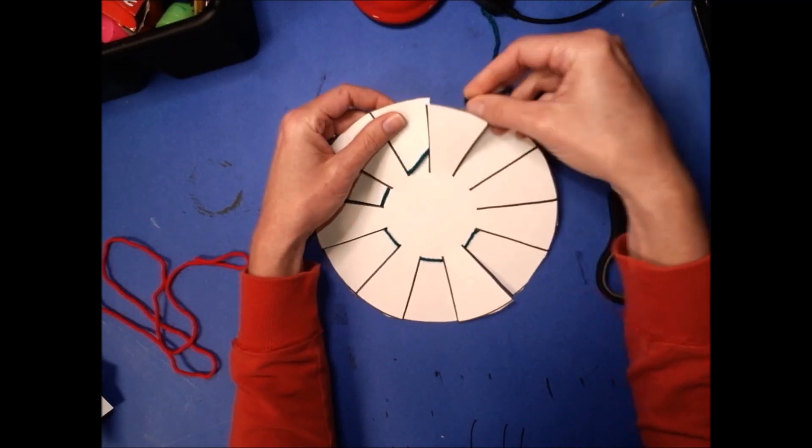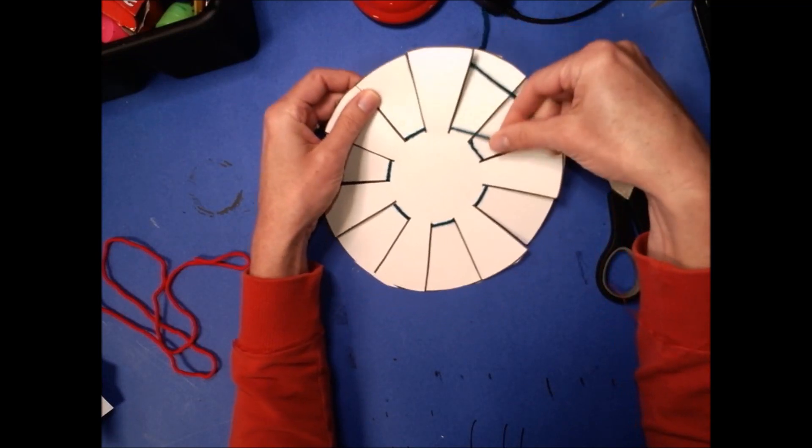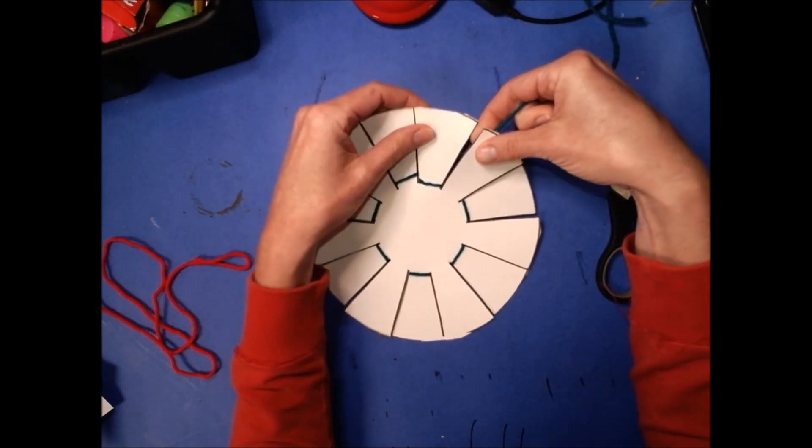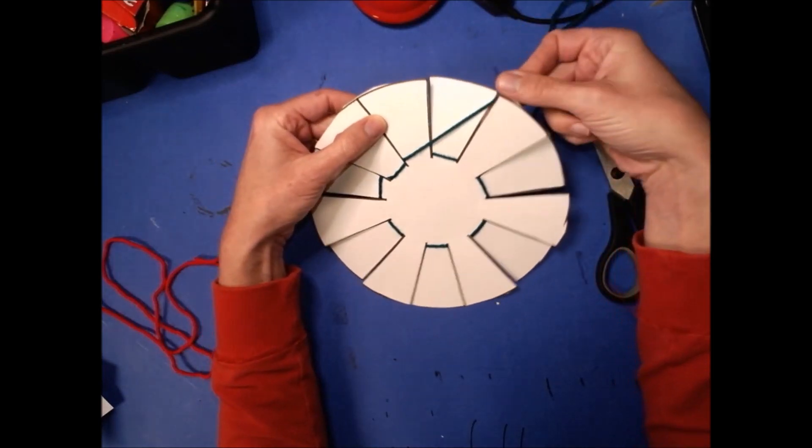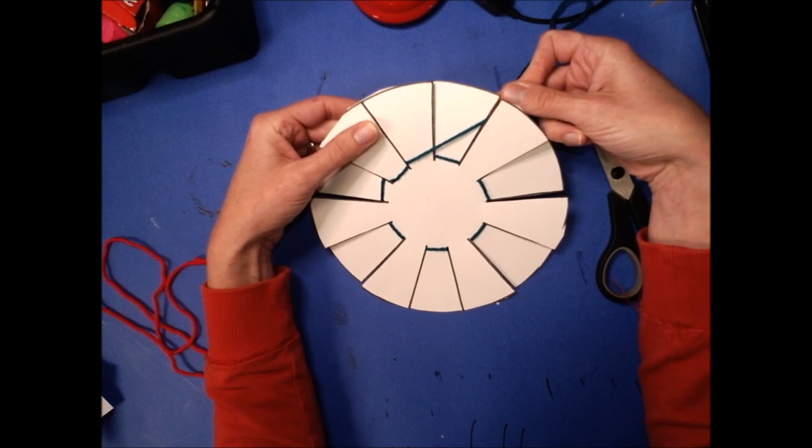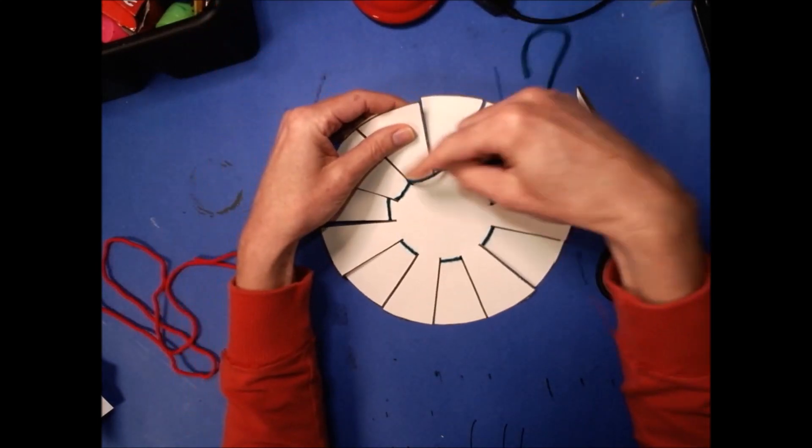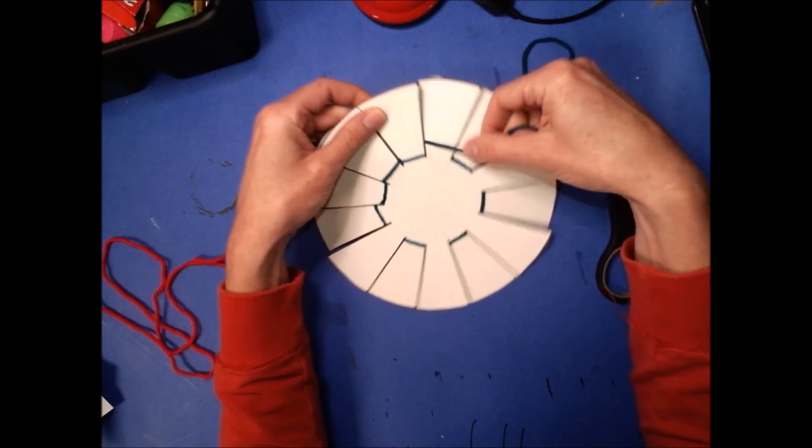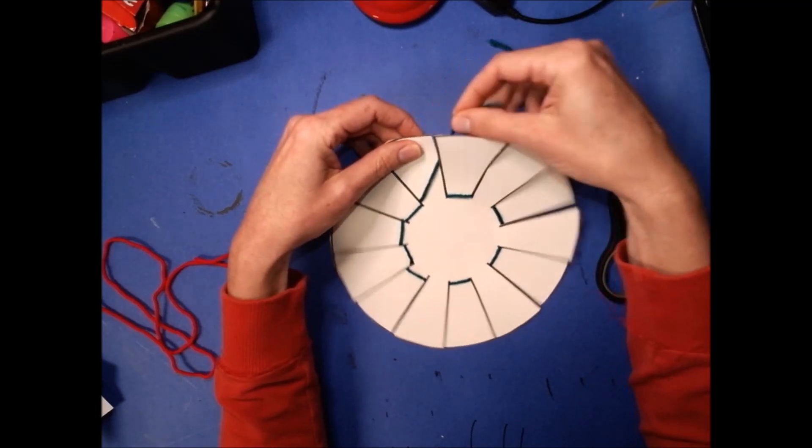So for my pattern, if I did this, would that be keeping with my pattern? No, because I went over, under, over, over. It's over, under, over, under. And the more I go around, the more of these little strips of yarn are gonna fill up my circle.